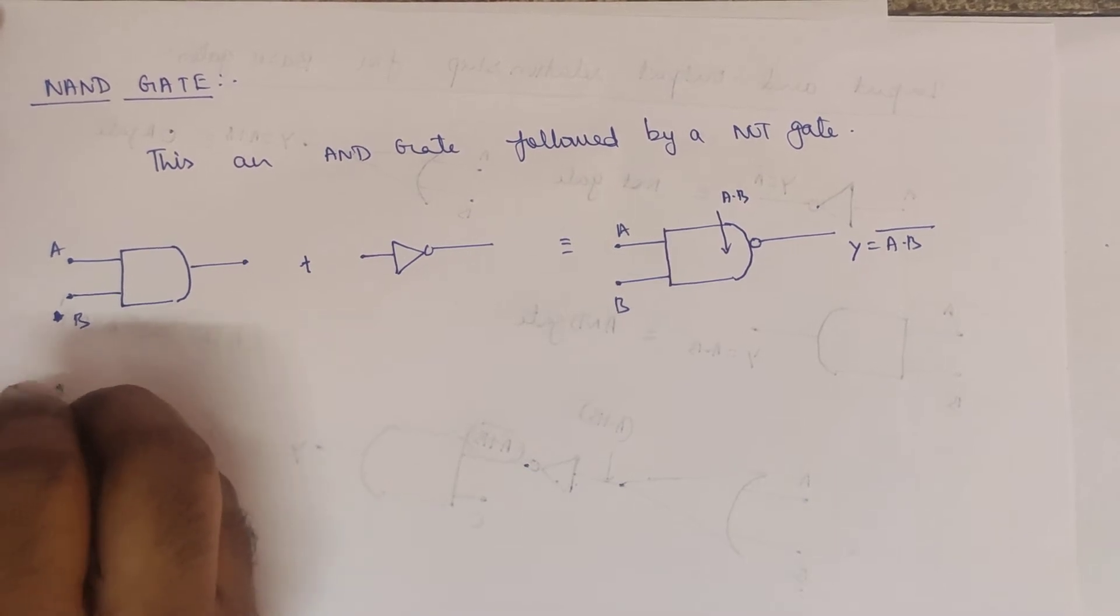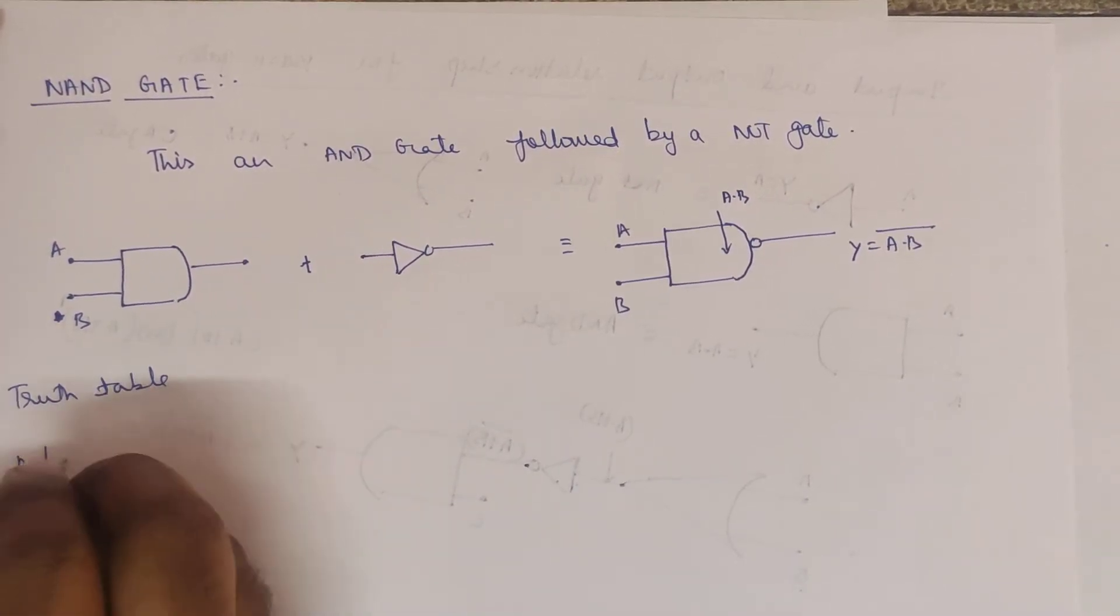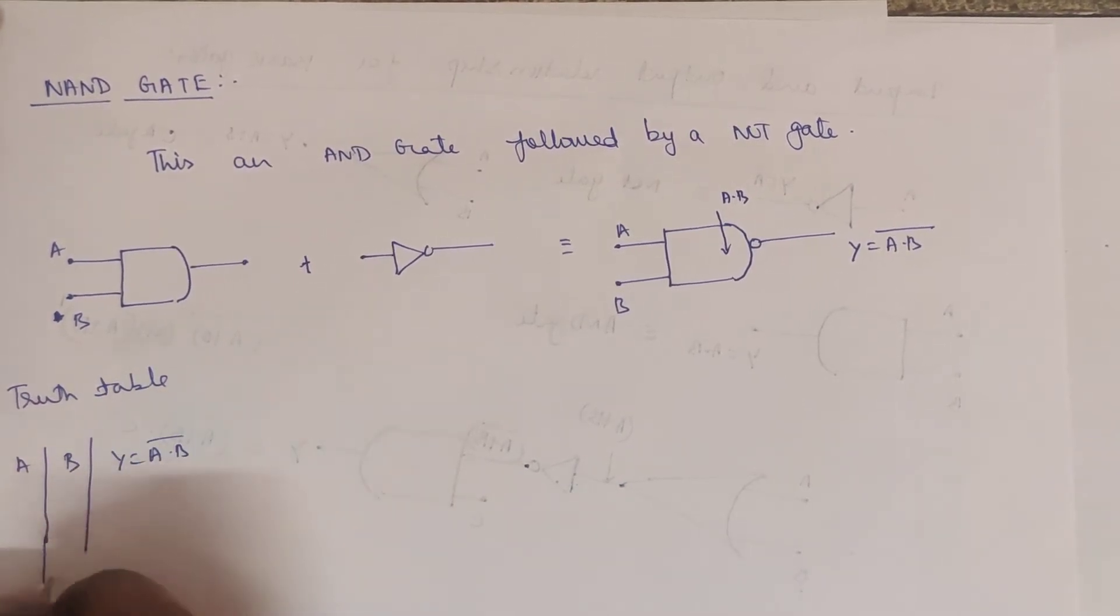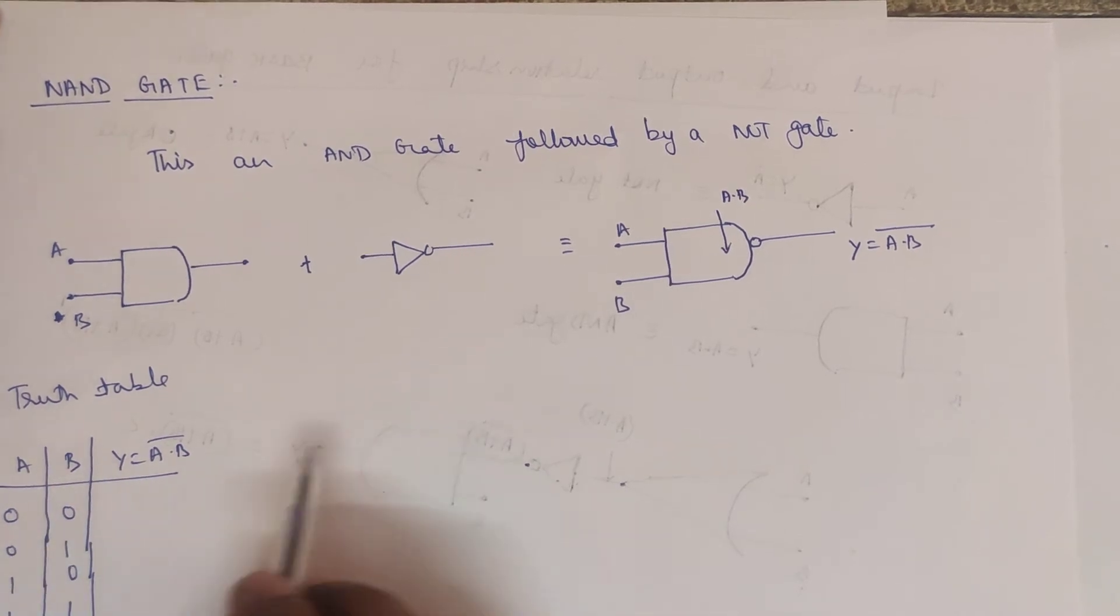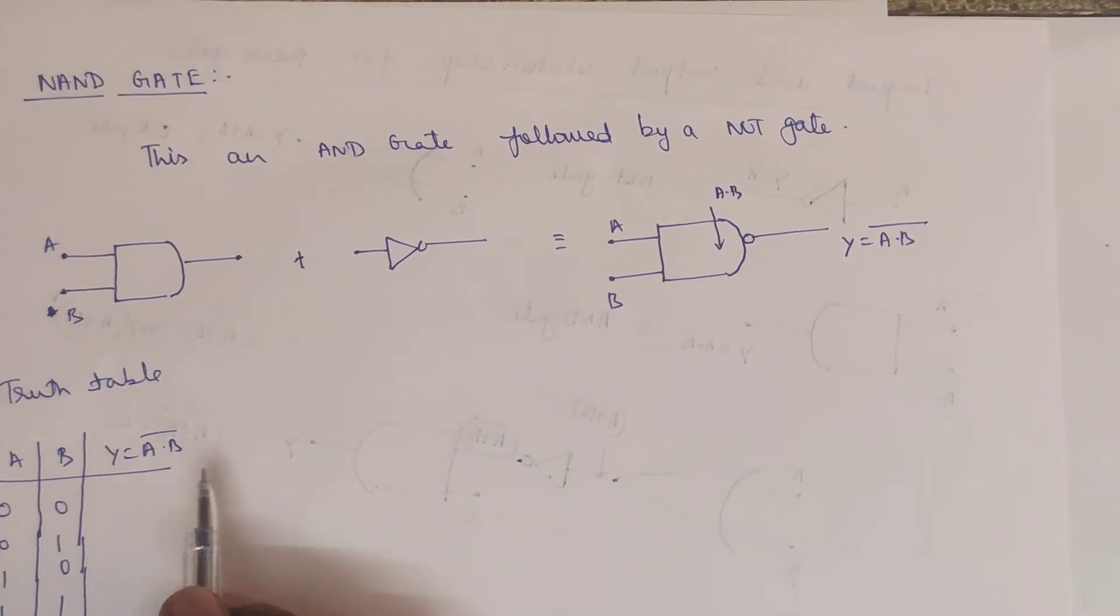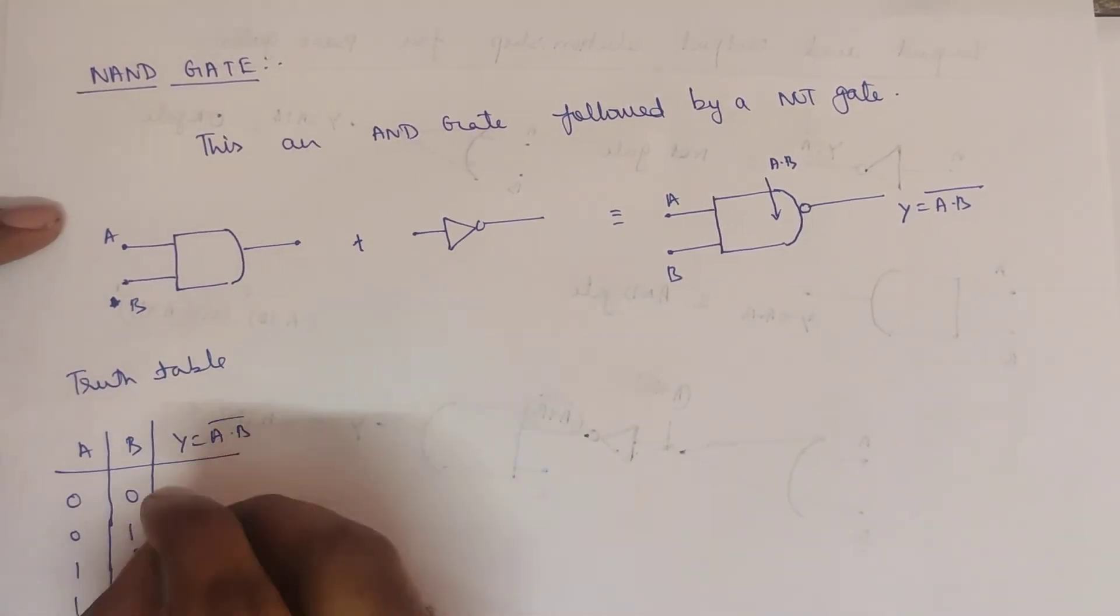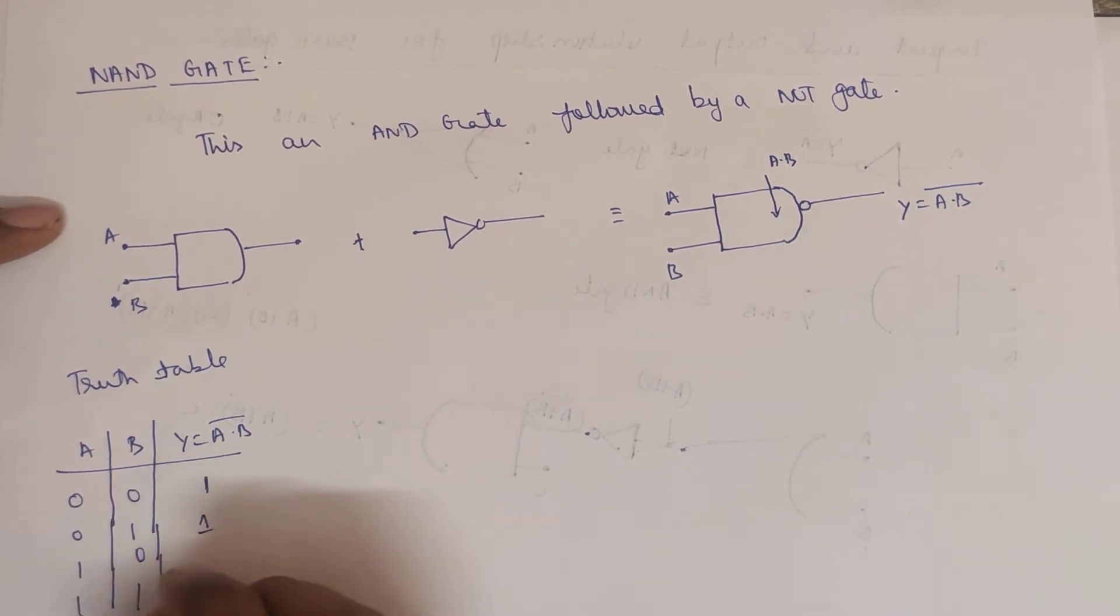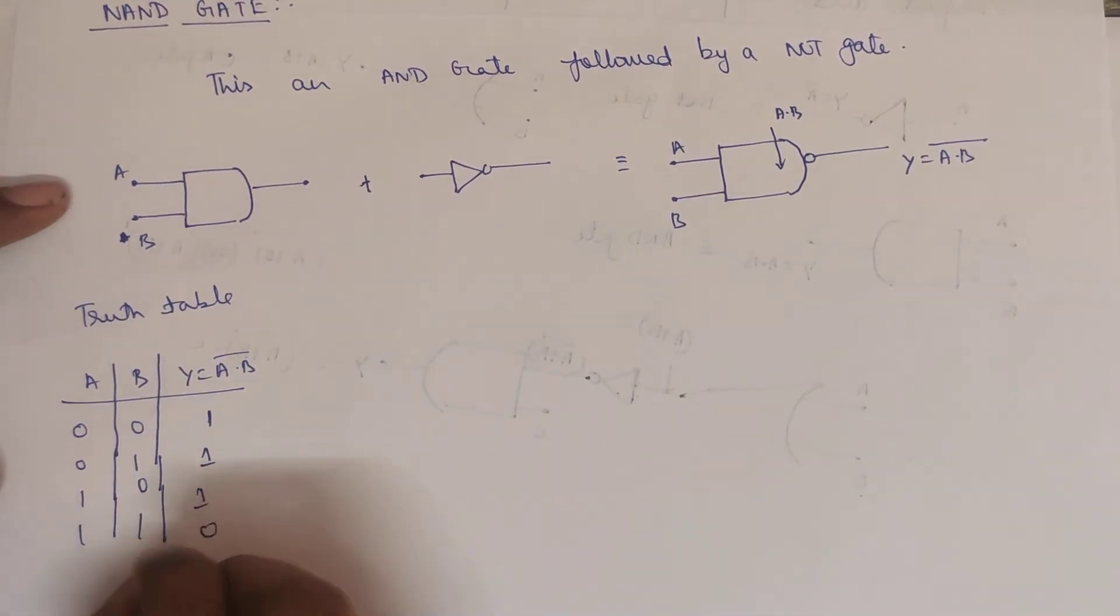So you can draw the truth table. A, B, and output would be Y equal to A dot B the whole bar. Zero zero, zero one, one zero, then one one. So zero into zero is zero, but whole bar becomes one. Zero into one becomes zero, so whole bar becomes one. One into zero becomes zero, so whole bar becomes one. One into one becomes one, but if you reverse that, that becomes zero.